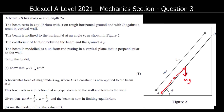Let's draw on all the forces. We've got the weight acting downward. We're going to have a normal reaction at A, a normal reaction at B. The wall is smooth but the ground is rough, so we're going to have a friction force opposing the motion.